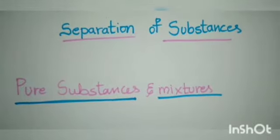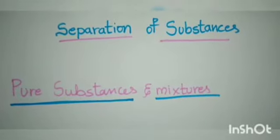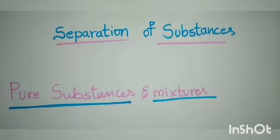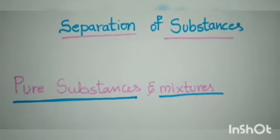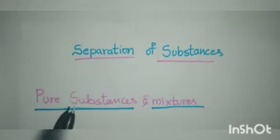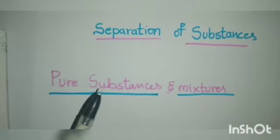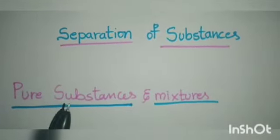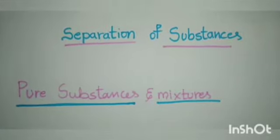We use a variety of substances in our everyday lives. These substances are made up of small particles called molecules. Substances are of two kinds: pure substances and mixtures. Substances that contain only one kind of particle are called pure substances.